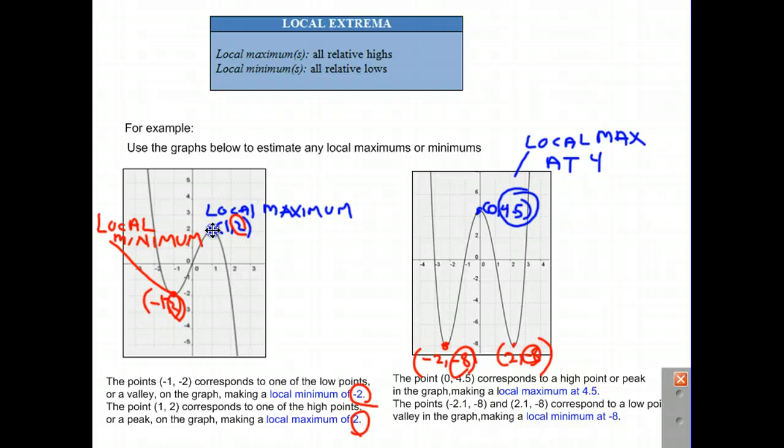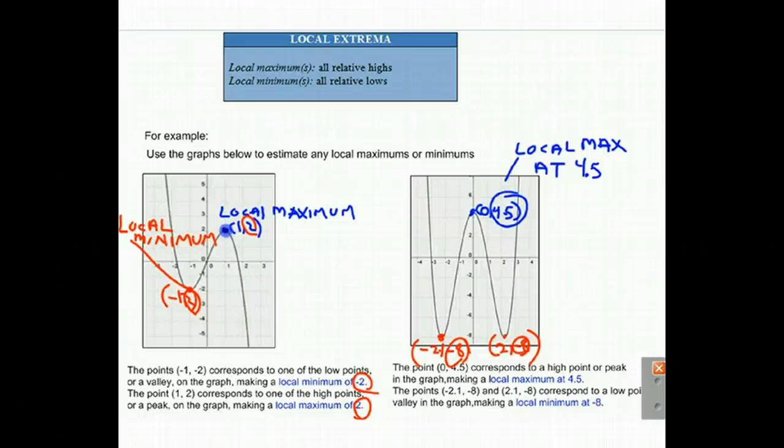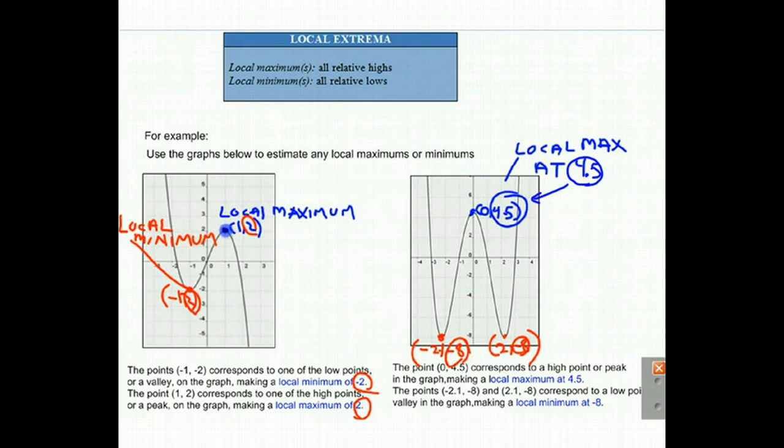Let's fix a little minor mistake. We mentioned that this is at 4.5, and so over here that should also reflect 4.5. The point here was 2, but we probably should say it was 2.1. But the key point here is that the local minimum is at negative 8.